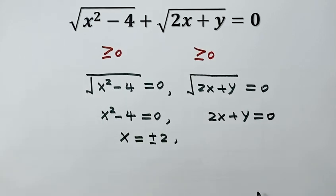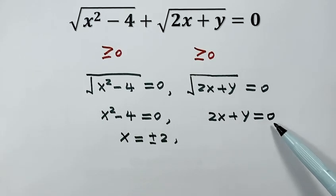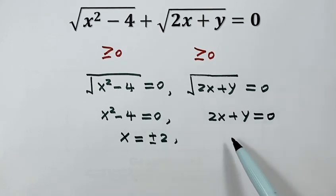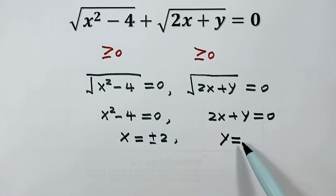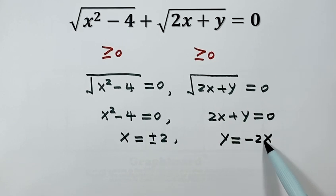For the second equation, we have one linear equation with two variables. So we solve for y: subtract 2x from both sides, giving y equals negative 2x.